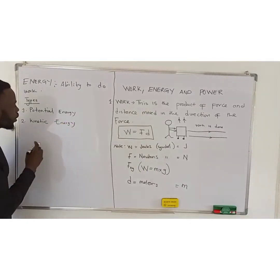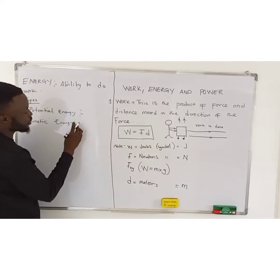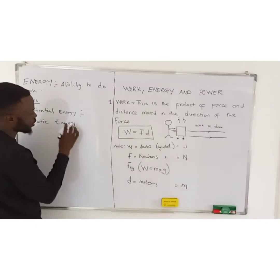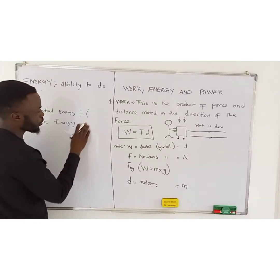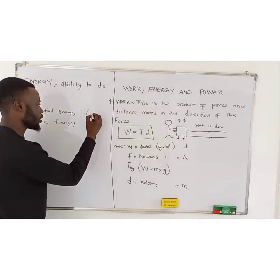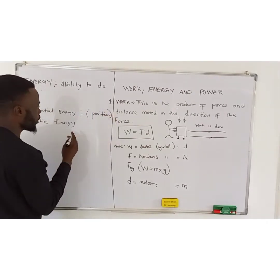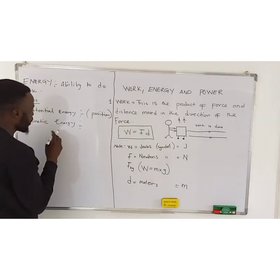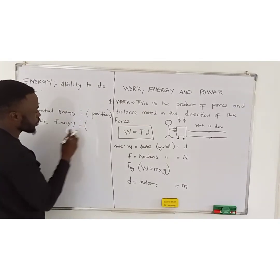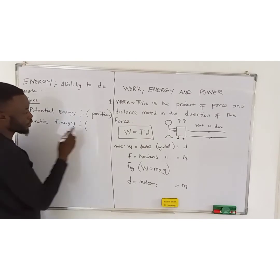Potential energy can be defined as the energy possessed by a body due to its position. Kinetic energy can be defined as the energy possessed by a body in motion.